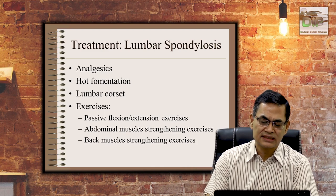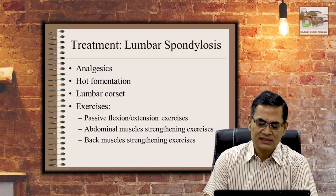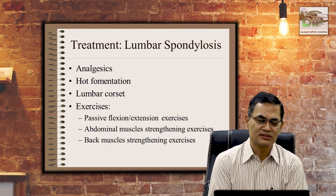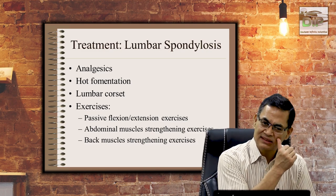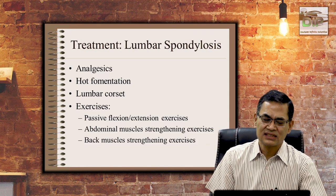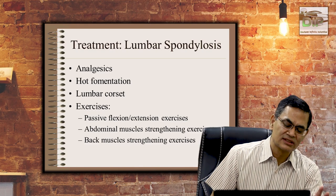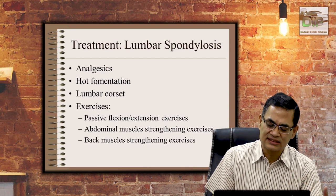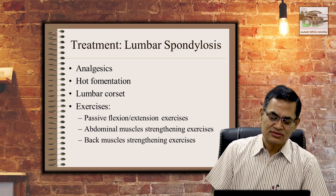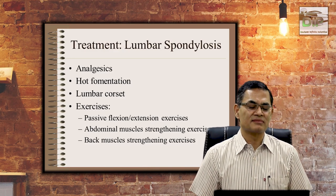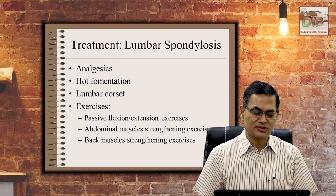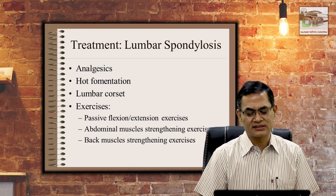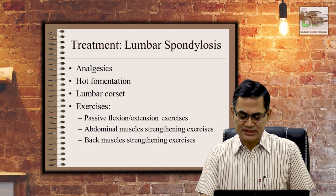The goal is to strengthen the abdominal and back muscles. Whether it is knee osteoarthritis, hip osteoarthritis, cervical spondylosis, or lumbar spondylosis, the purpose is to strengthen the muscles supporting the joint, thereby decreasing pain. For the cervical spine, strengthening the muscles around the neck supports it. For the lumbar spine, strengthening the abdominal and back muscles provides lumbar support — that is why exercises are prescribed.